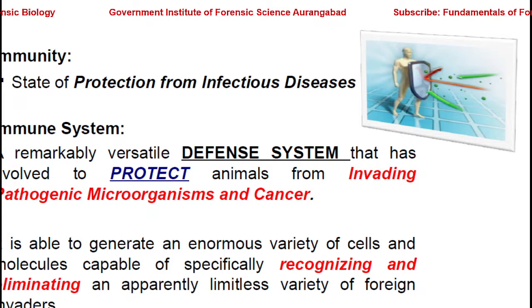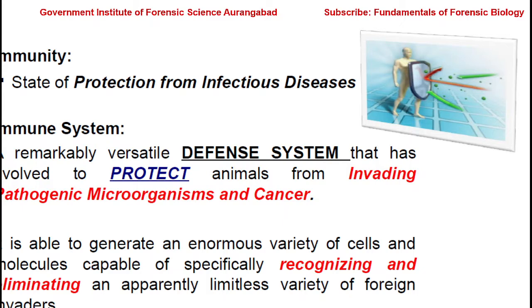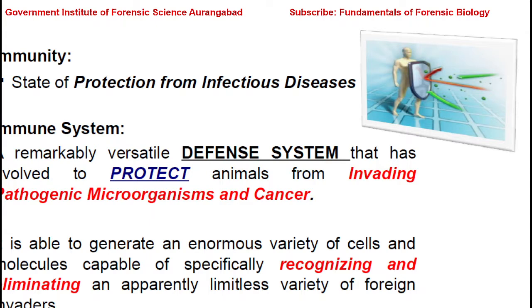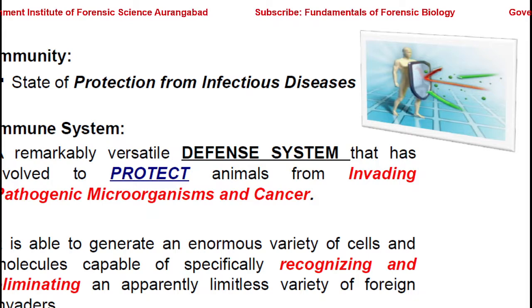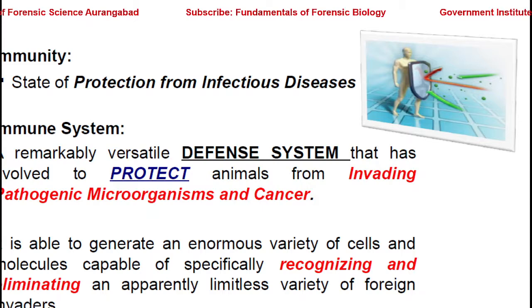Immunity is a state of protection from infectious disease, while the immune system is a remarkably versatile defense system that has evolved to protect animals from invading pathogens — most of them microorganisms — and from dreadful diseases like cancers. It is able to generate an enormous variety of cells and molecules capable of specifically recognizing and eliminating an apparently limitless variety of foreign invaders.